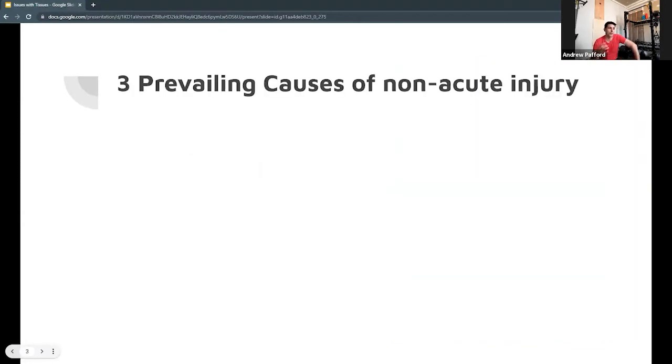Today we're going to go over the three prevailing causes of what we would call non-acute injury, which is layman's terms for you didn't get hit by a bus or you didn't get shot. These are things that you can do over time that can be insidious. You just wake up one morning and you've got this nagging pain in your back.